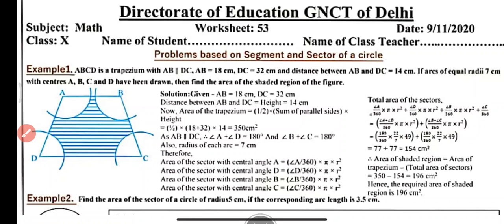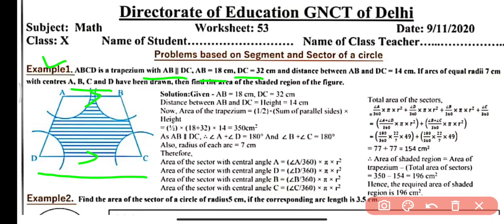Let's begin with Example 1. ABCD is a trapezium with AB parallel to DC. We are given AB = 18 cm, DC = 32 cm, and the distance between AB and DC (height of the trapezium) = 14 cm. Arcs of equal radii 7 cm with centers A, B, C, and D have been drawn.